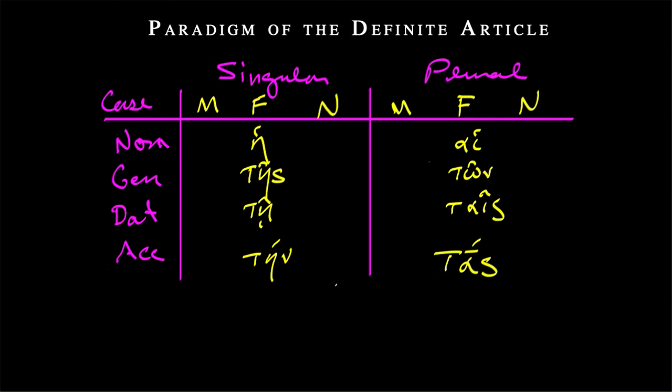And what can we say about them? Well, in the nominative case, they begin with vowels or diphthongs and have a rough breathing. And they're proclitic. What does that mean? That means they have no accent.